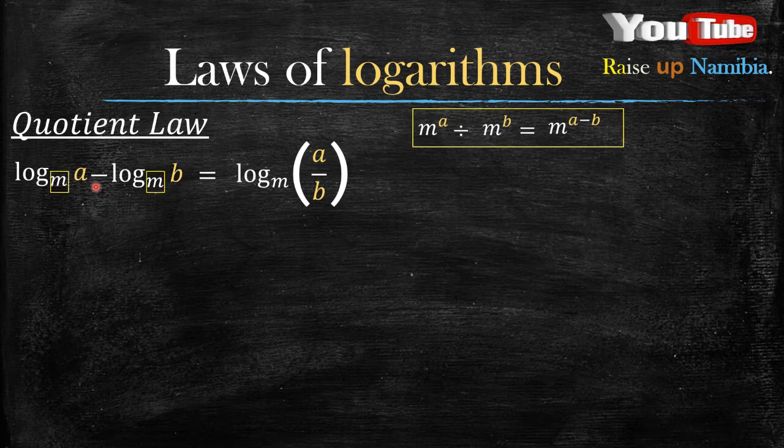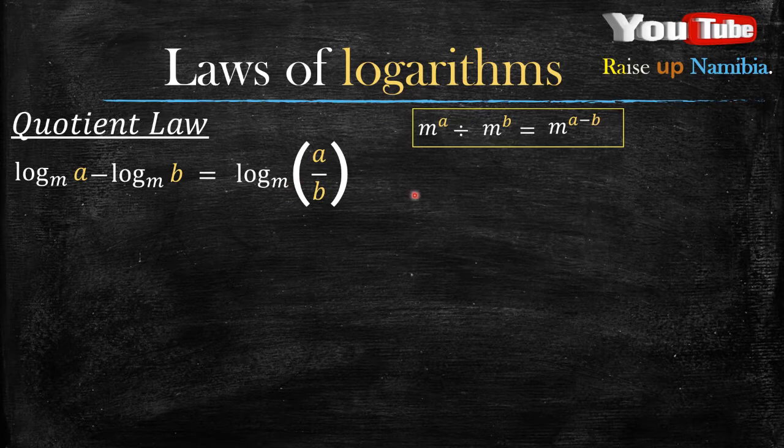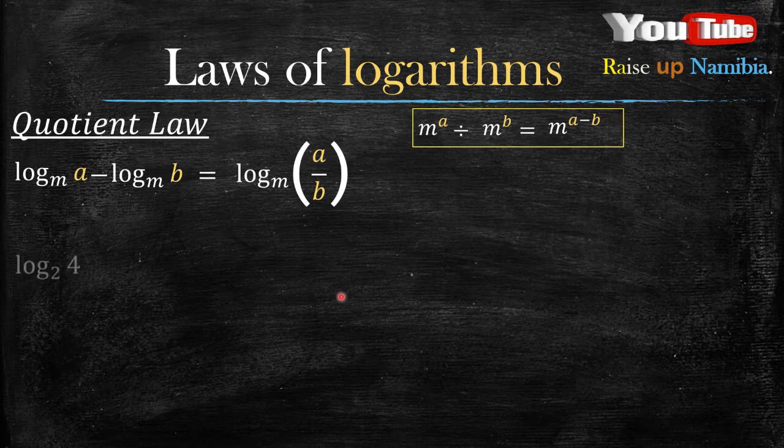As long as the bases are the same, and then you divide. But in our division law, the division comes first, and then you subtract the exponents. But don't worry about how they are related. Let's rather look into some examples of how to use the quotient law.